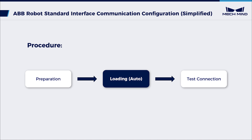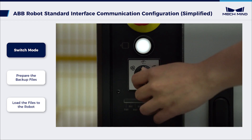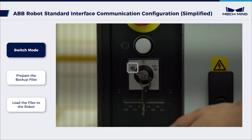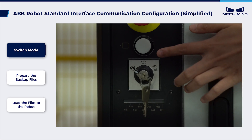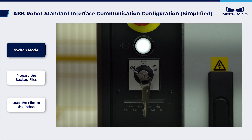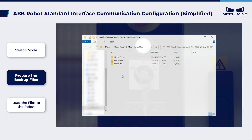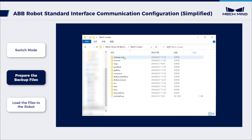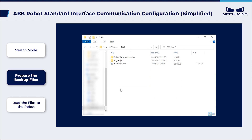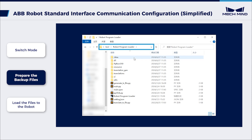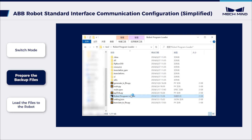Now let's proceed with the auto-load process, which will be completed by the Robot Program Loader program. Switch the key in the controller to the automatic mode and ensure that the motor indicator light is on. Navigate to the installation directory of MechVision and MechViz. Go to the Robot Program Loader folder by using the MechCenter tool's Robot Program Loader Path, and double-click the Robot Program Loader program to open the loader.